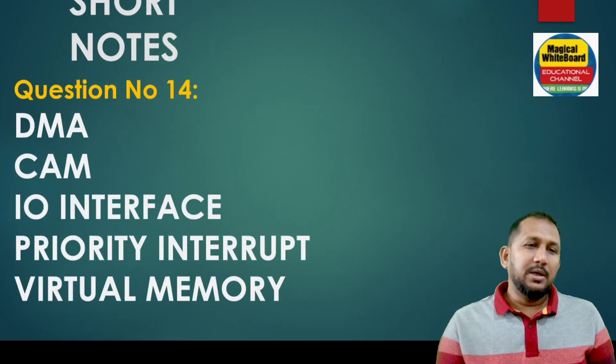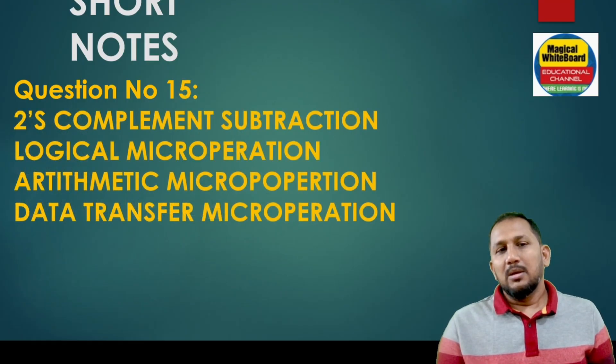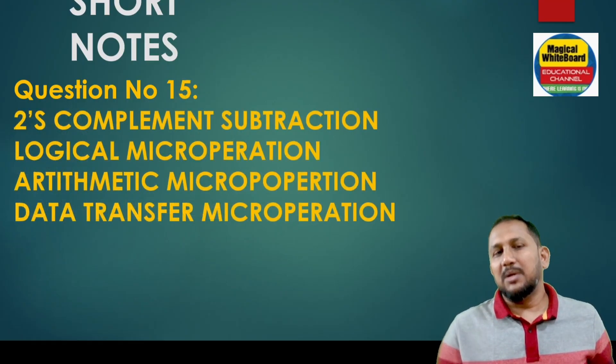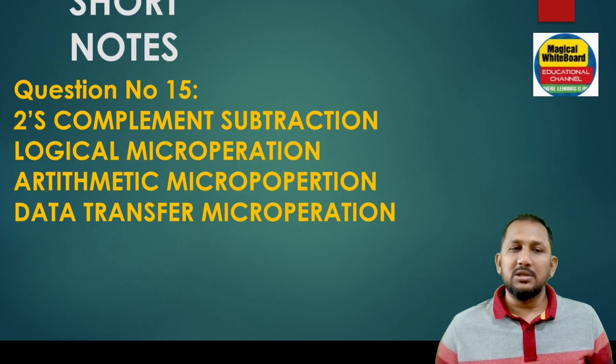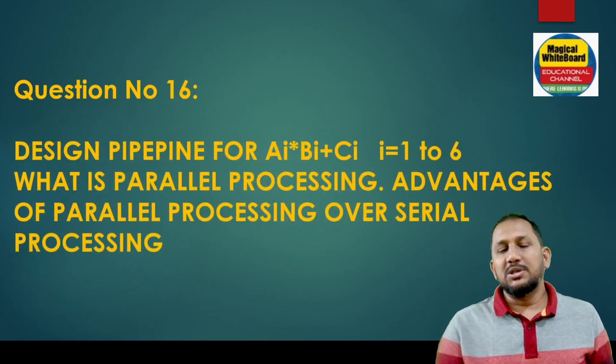Different types of interrupts. Short note: DMA direct memory access, CAM content addressable memory, I/O interface, priority interrupt, cache memory. Two's complement subtraction, nine's complement subtraction, logical micro-operations, arithmetic micro-operations, data transfer micro-operations.